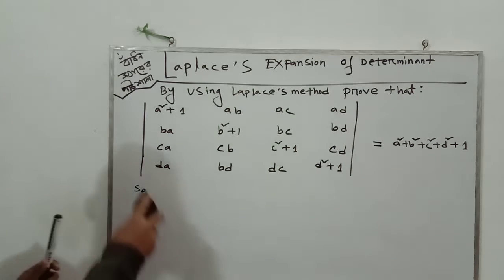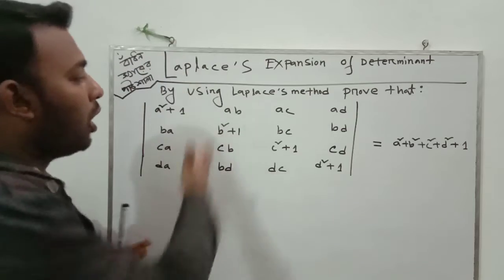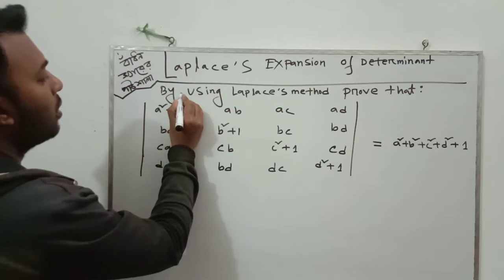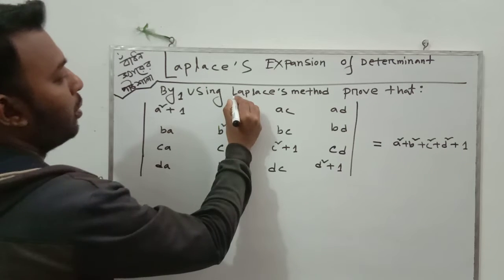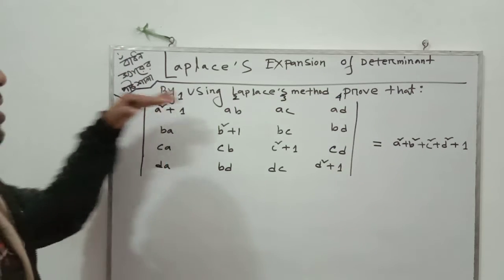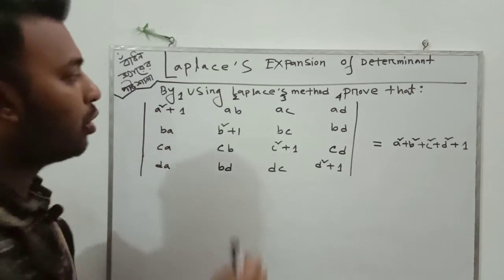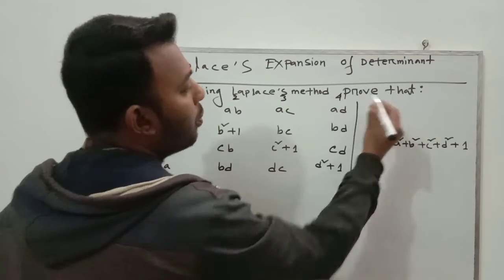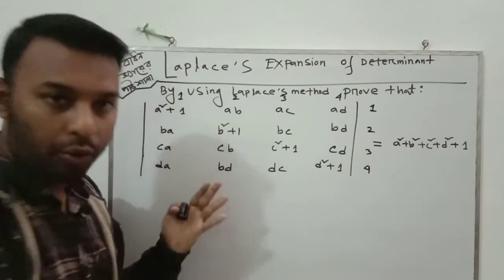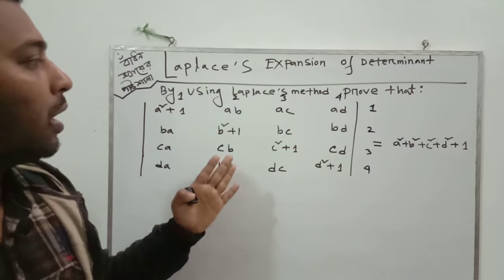Now I am going to start. First we have to write along column-wise and along row-wise. Column number one, column number two, column number three, and column number four. And now we write along row-wise: row number one, row number two, row number three, and row number four.